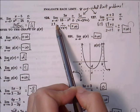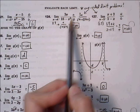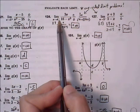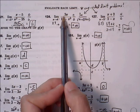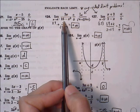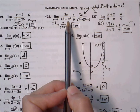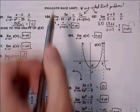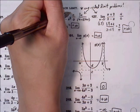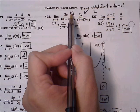Okay, 124 here. Limit as x approaches 4 from the left side of 4. First thing we do is plug in 4, and we're going to get 12 over 0 — not 0 over 0, but 12 over 0.